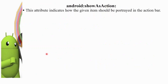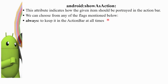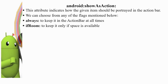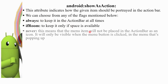The showAsAction attribute indicates how the given item should be portrayed in the action bar. You can choose any one of the flags. The first one is 'always' — to keep it in the action bar at all times. The next one is 'if room' — if there is space in the action bar it will show, otherwise it will overflow. You can set the action bar in portrait or landscape accordingly. 'Never' means the menu item will not be placed in the action bar as an icon; it will only be visible when the menu button is clicked, in the overflow menu that pops up, setting the top-right overflow icon.